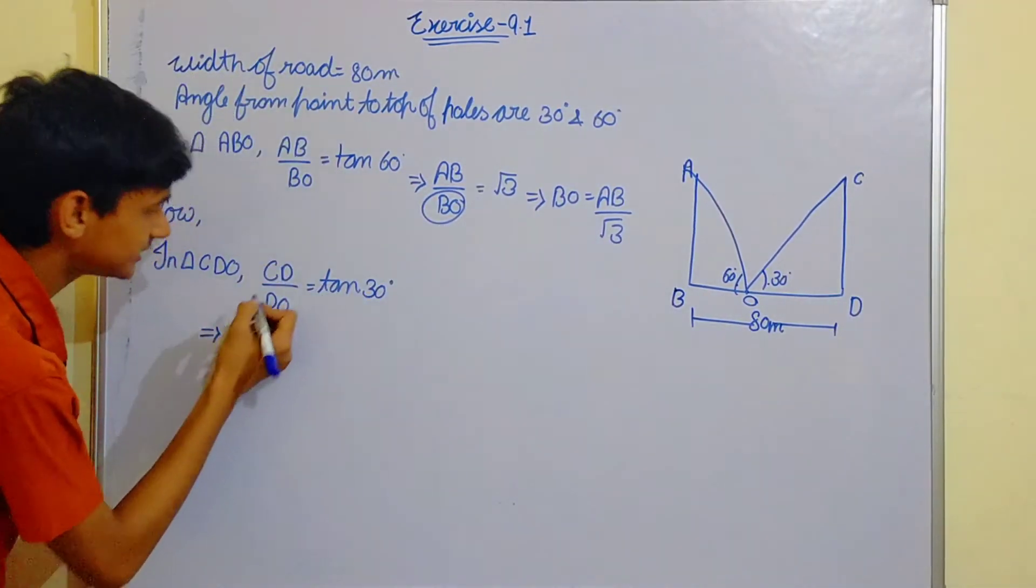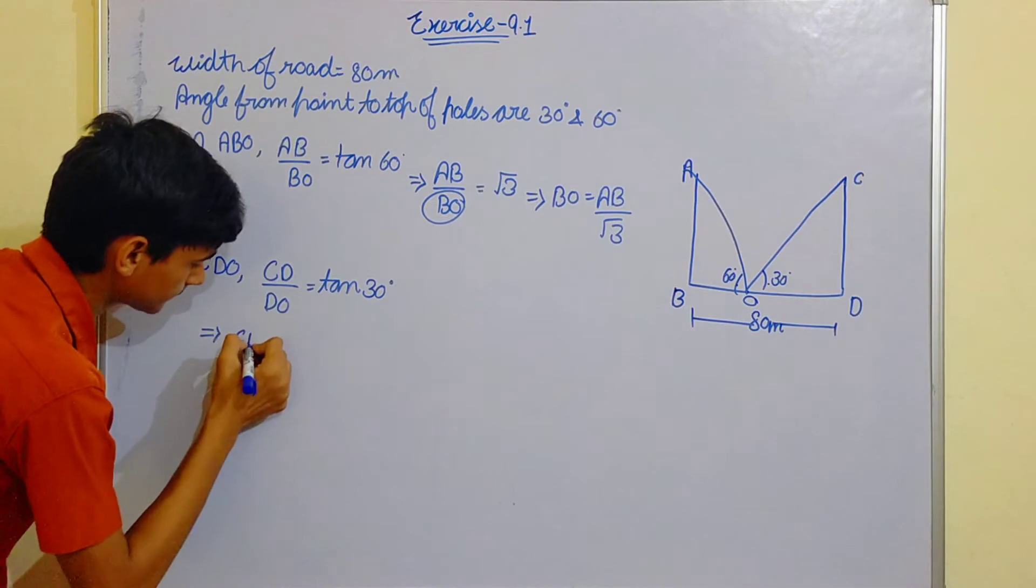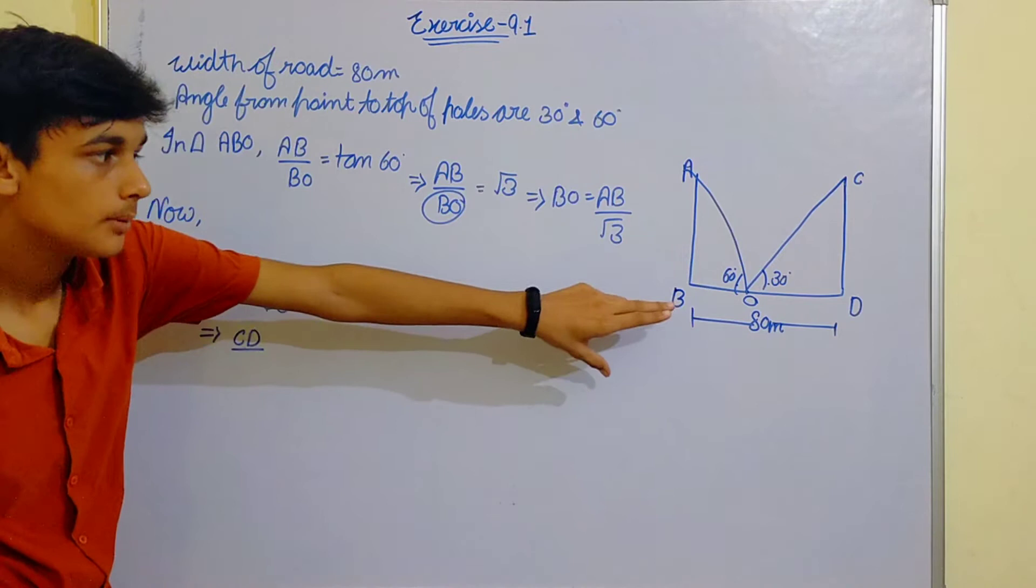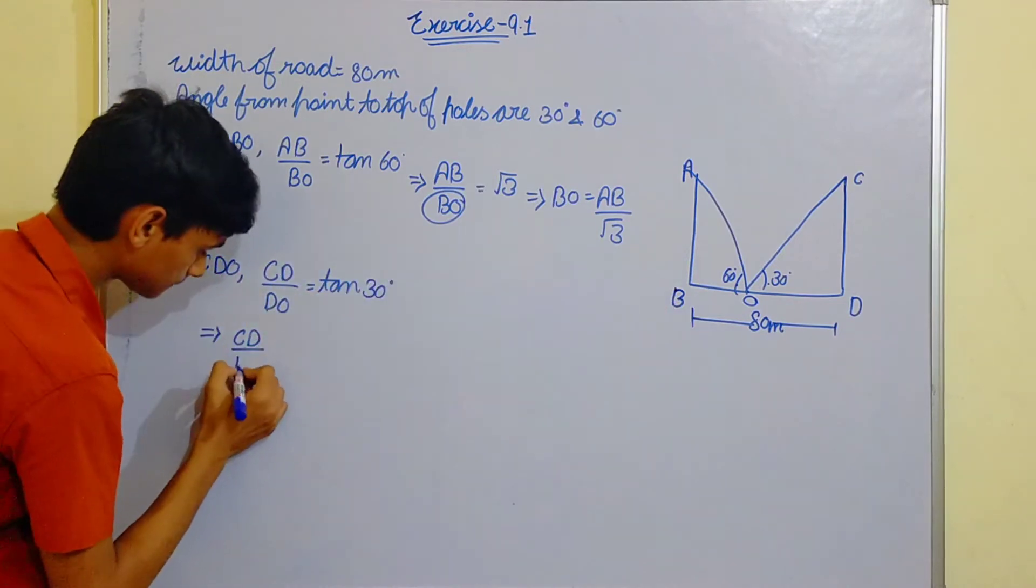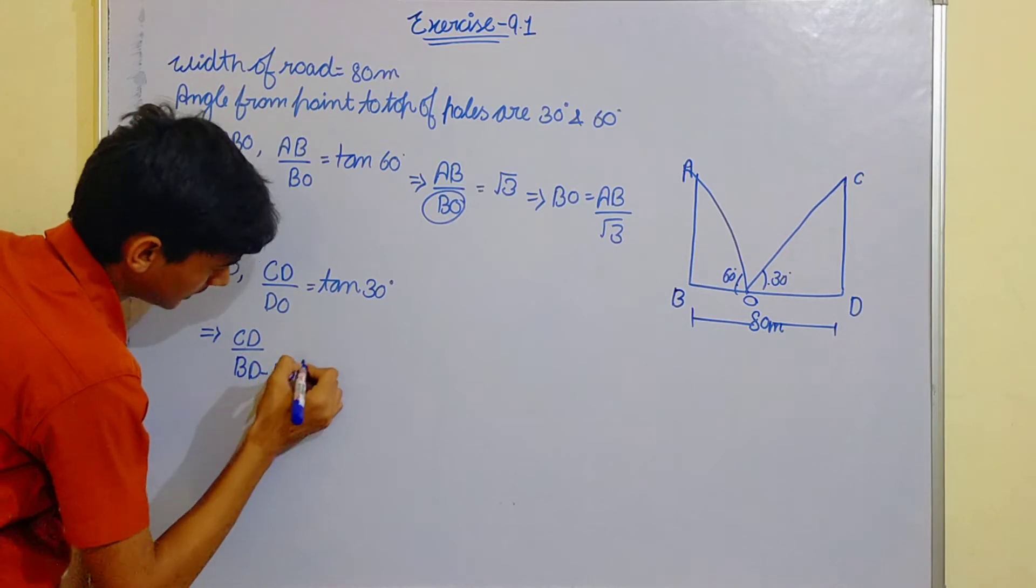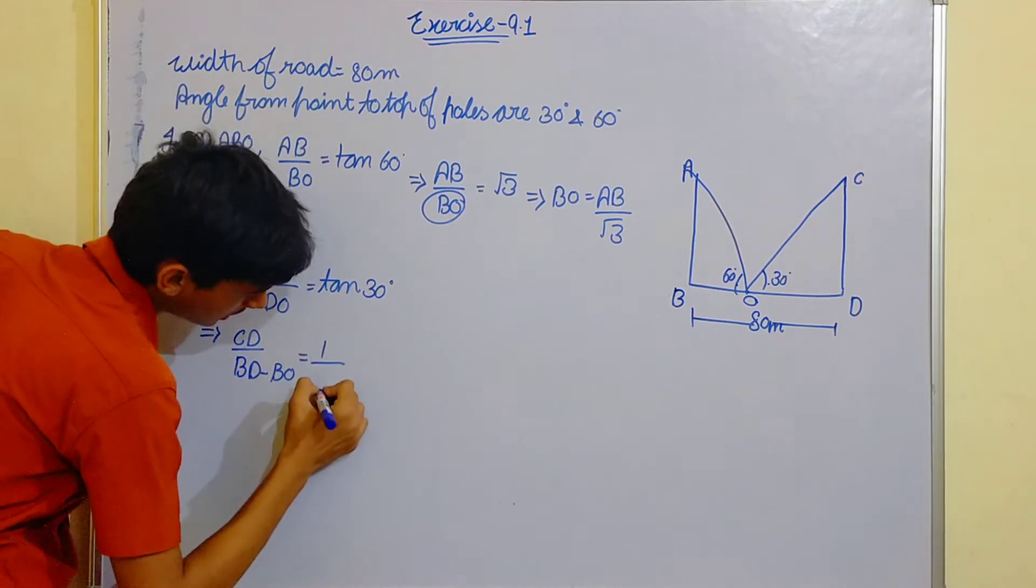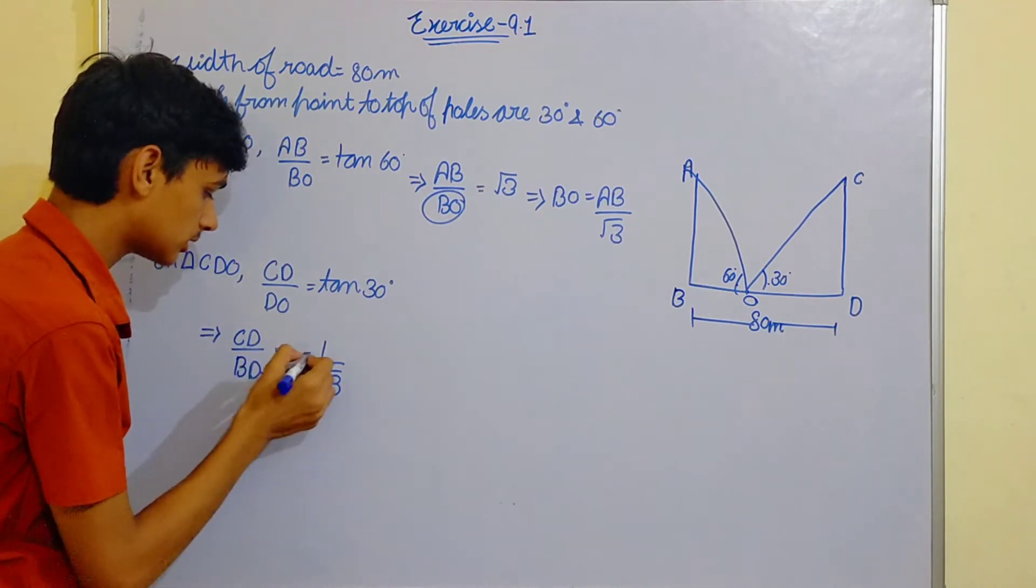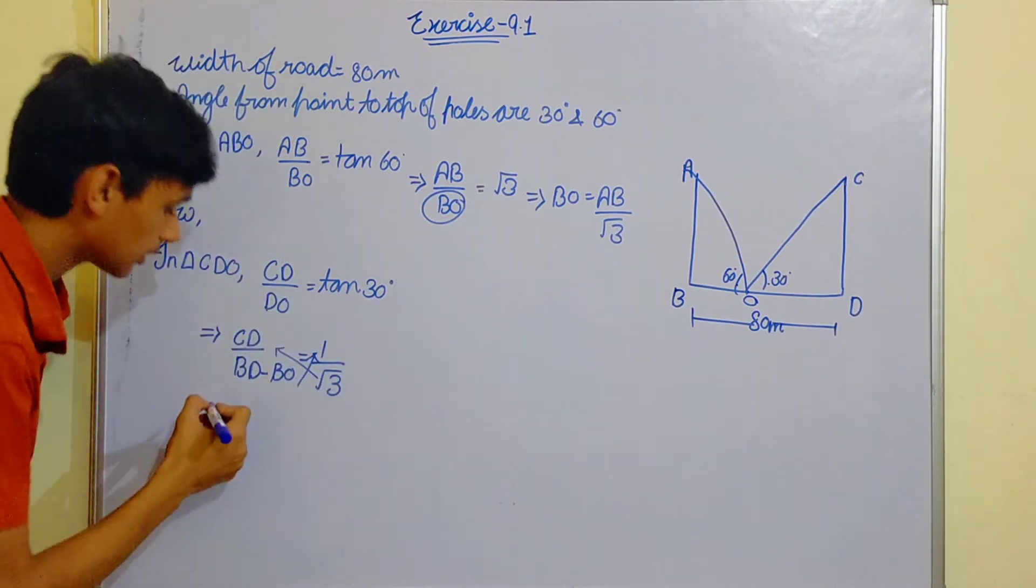CD upon DO is equals to tan theta which is 30 degrees. Put the value, CD as it is. Now DO we can write as BD minus BO,